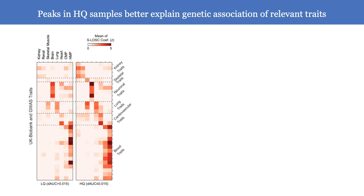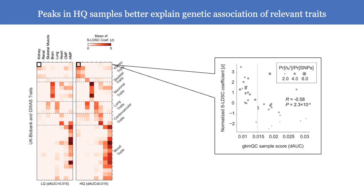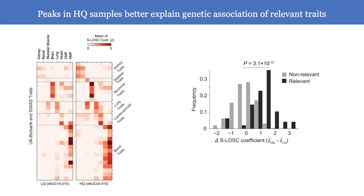To generalize the contribution of open chromatin peaks in high-quality samples to explain GWAS loci of relevant phenotypes, we conducted stratified LD-score regression and compared the LDSC coefficients between over 100 high-quality samples versus low-quality ones. The heat map demonstrates that variants from high-quality samples systematically contribute more to heritability than low-quality samples for 30 relevant traits from UK Biobank and GiBiN's GWAS. We also confirmed the statistical significance of the increased coefficient values in high-quality samples compared to low-quality ones.